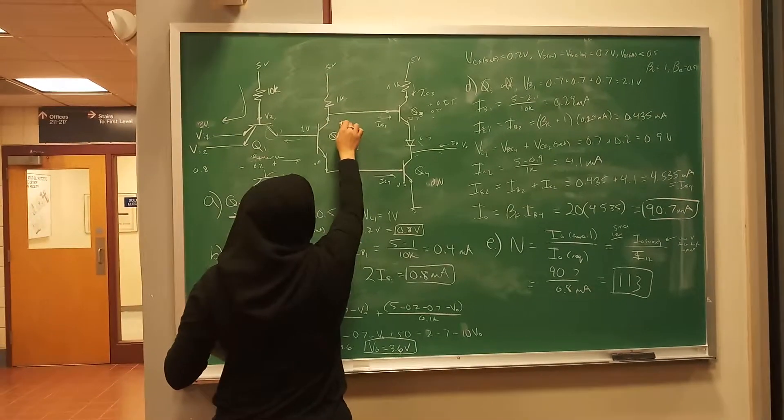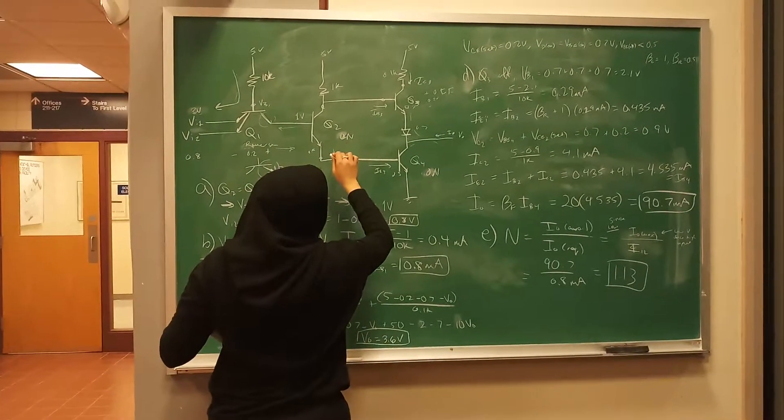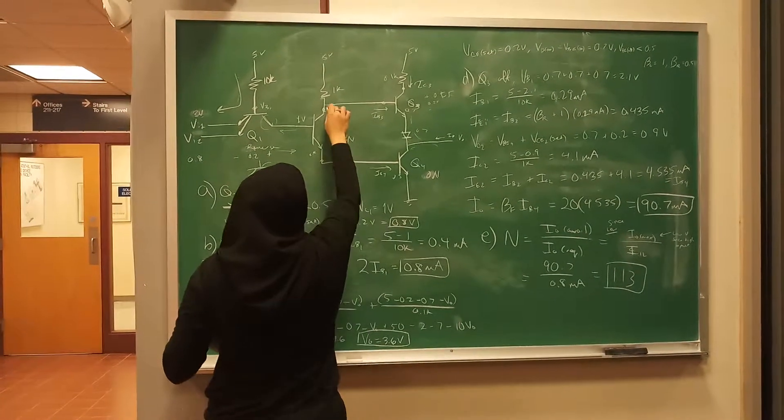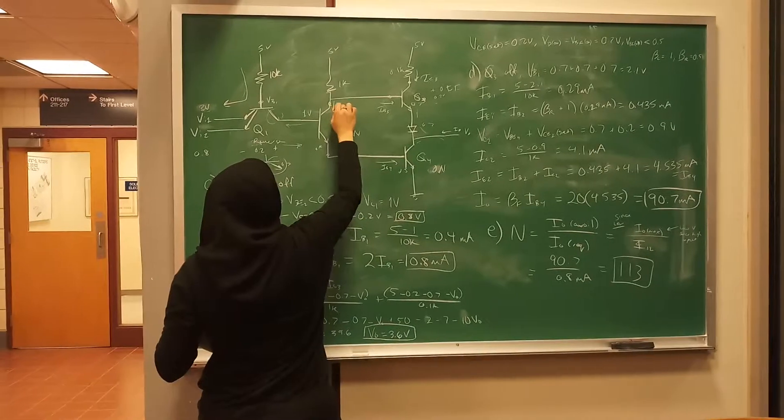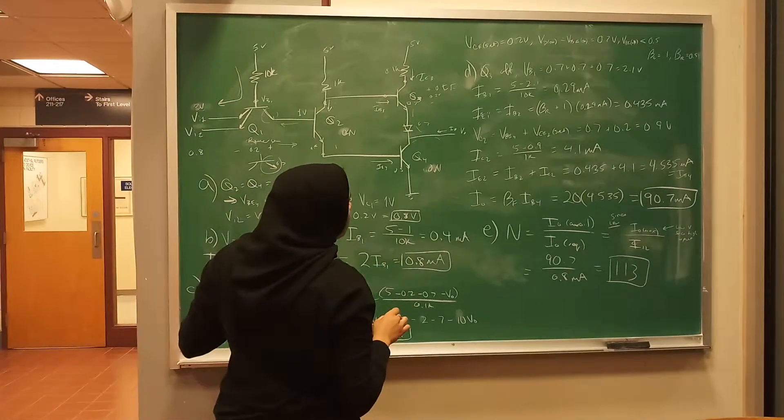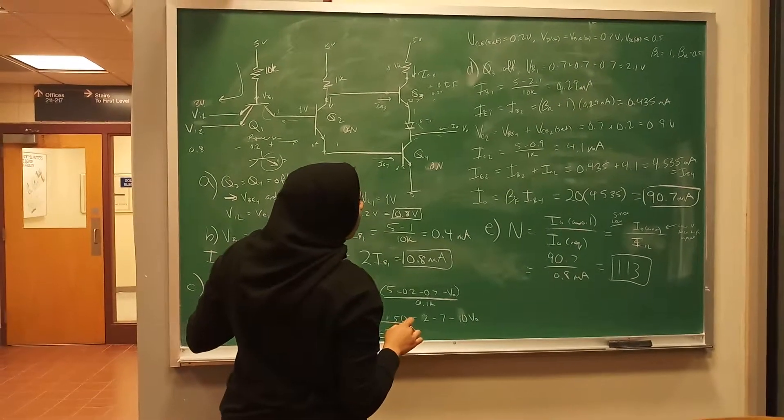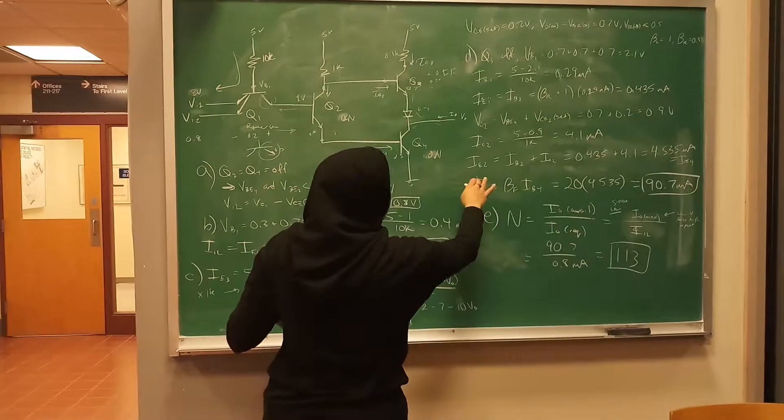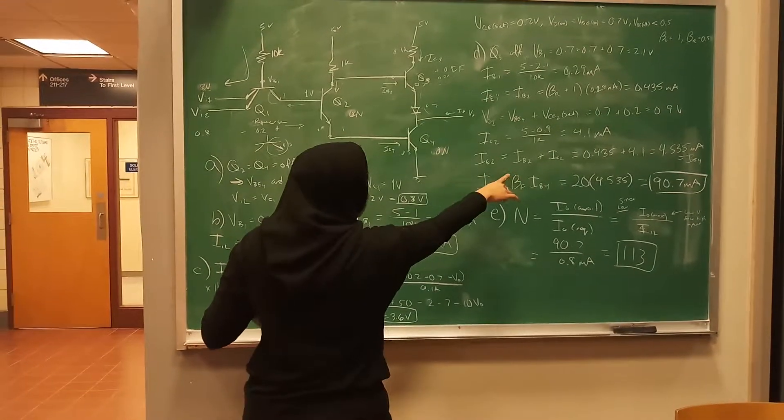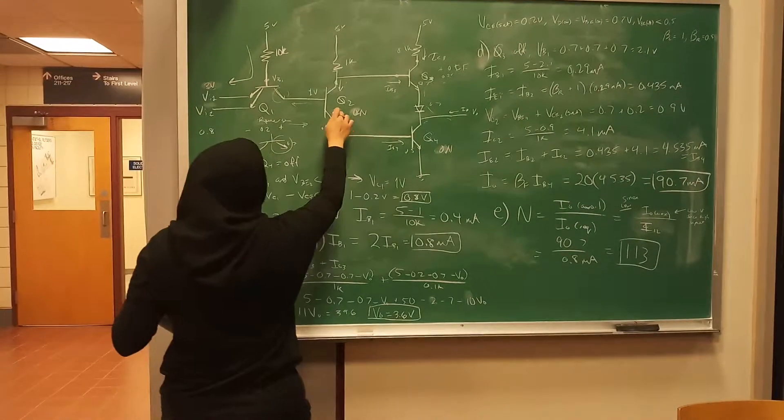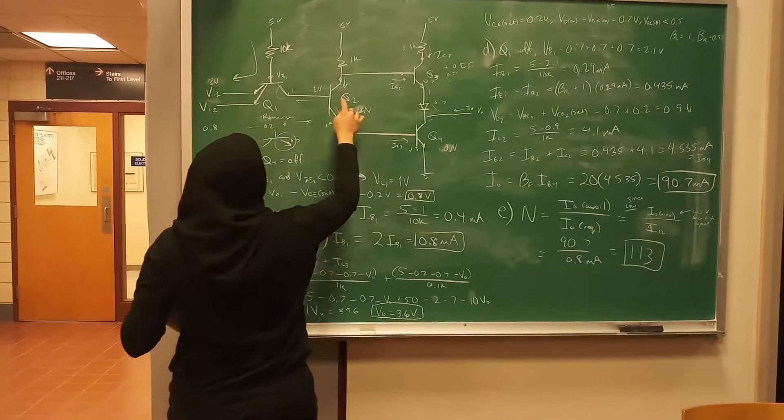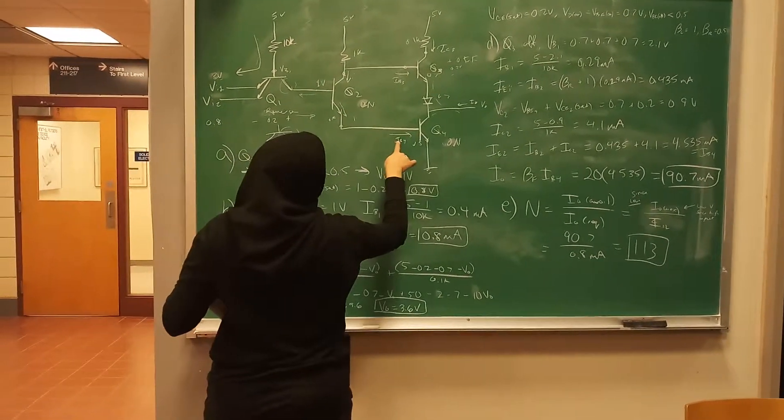So then for I_C2, you can get, here, this is I_C2. Gives you 4.1 milliamps, because 5 minus 0.9. And then you get I_E2, which is this one right here. Because you need to get this current to get this current.